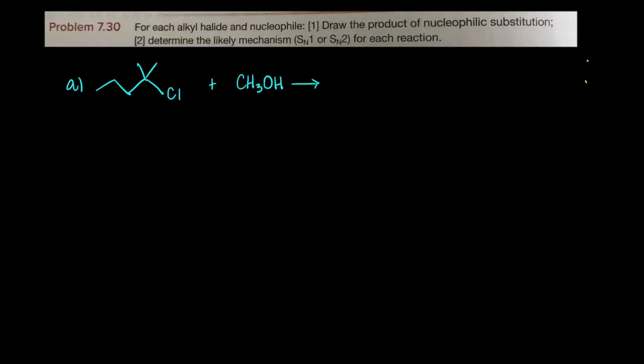When we look at this alkyl halide, we know this is the leaving group, and we know this is in some way the nucleophile. But remember with alcohols you have a deprotonation at the end step to give you the ether here. Now this is a tertiary alkyl halide, so that means it must be SN1.